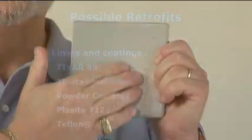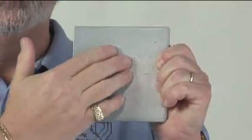Joe will describe uses for liners such as Tyvar 88 and 2B stainless steel, along with coatings such as electrostatic powder and Placite 7122 epoxy.